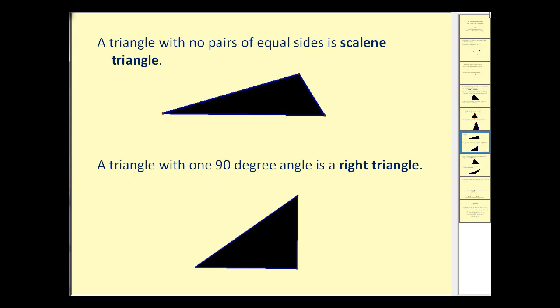A triangle with no pairs of equal sides is called a scalene triangle. So to show that these three sides are not equal, we would use tick marks. If we use one tick mark here, we'd have to use two, showing that those two are not equal. And three tick marks here to show this side is not the same length as either of the other two sides. It's also true that the angles would also be of different measure. And we can show that by using a different number of arcs through the angles.